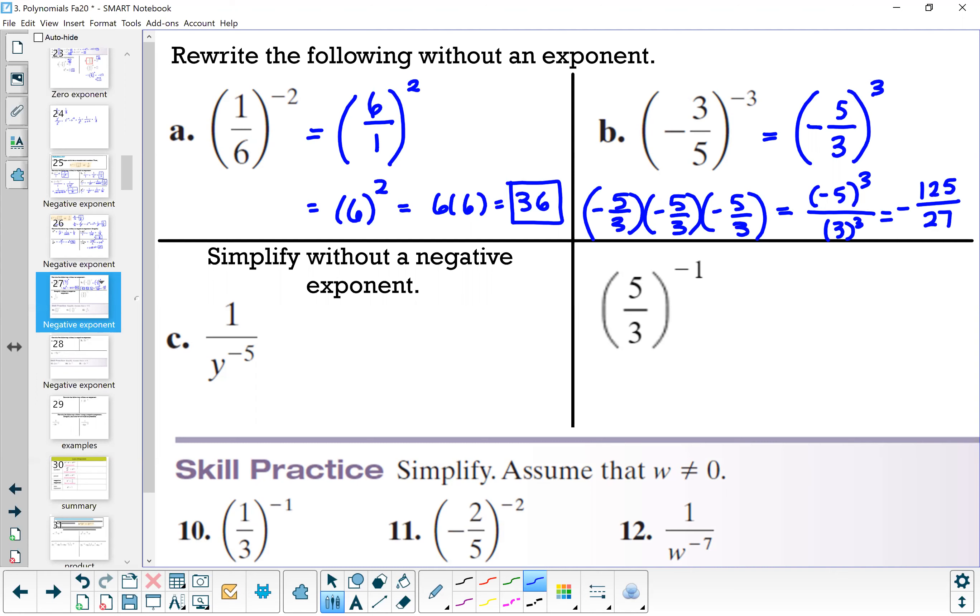All right, C: 1 divided by y to the negative fifth. Okay, again remember you're taking y to the negative fifth across the fraction bar. So since it's in the denominator, it's going into the numerator: y to the fifth. And we assume a 1 still in the denominator, which we don't need. We just have y to the fifth.